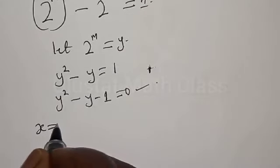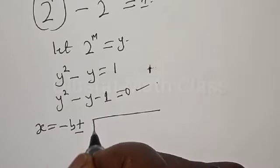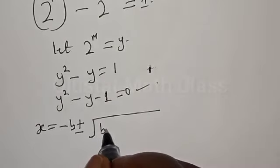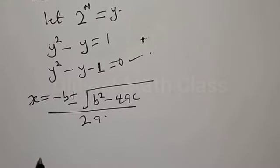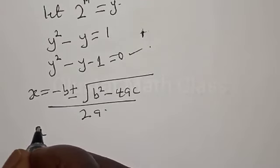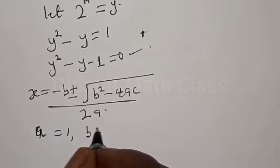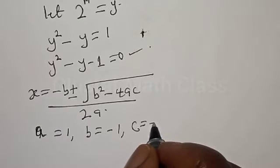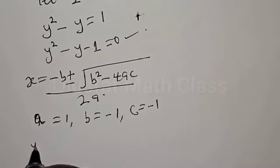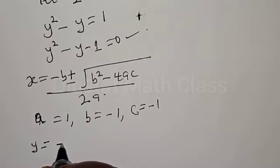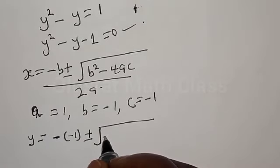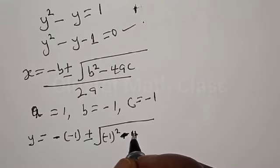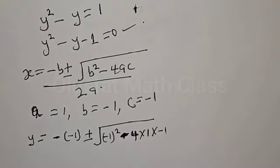That is, y is equal to minus b plus or minus square root of b squared minus 4ac, over 2a. Our a equals 1, b equals minus 1, and c equals minus 1. Therefore, we have y equal to minus 1 plus or minus square root of minus 1 squared minus 4 multiplied by 1 multiplied by minus 1, over 2a.